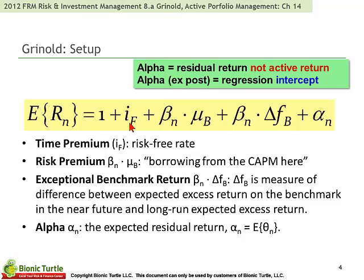The expected return of a security is a function of this familiar linear model. You'll notice we've got a risk-free rate — I always use the notation of the assignment, so normally I'd prefer R sub F to connote the risk-free rate, but the authors use their own notation. That's pretty common in terms of our linear multi-factor models. And then they've got a beta times mu of b, which in their language borrows from CAPM. So if you just stop right here, you can notice how we're pretty much at the CAPM.